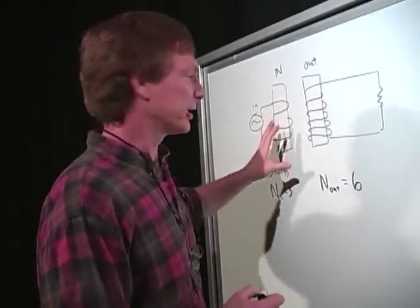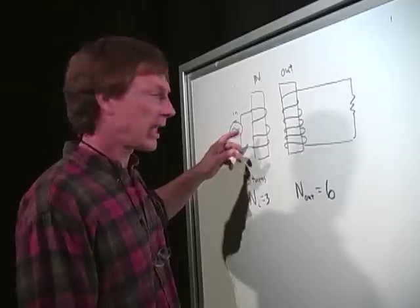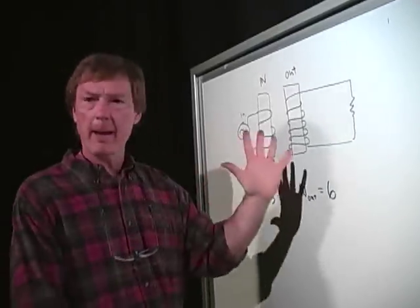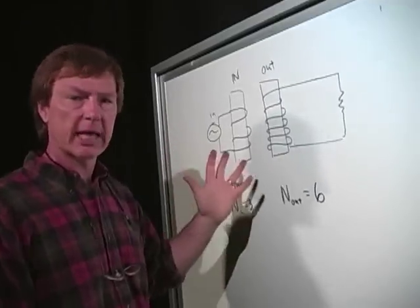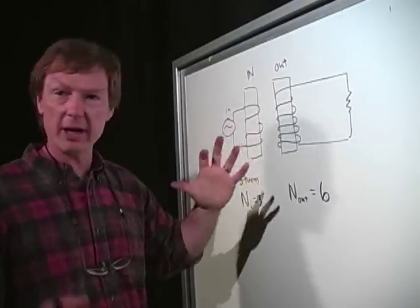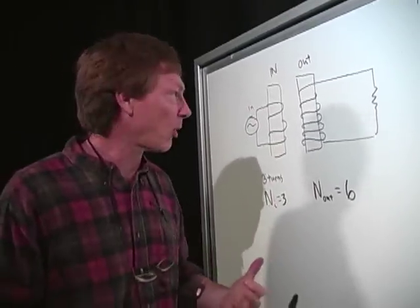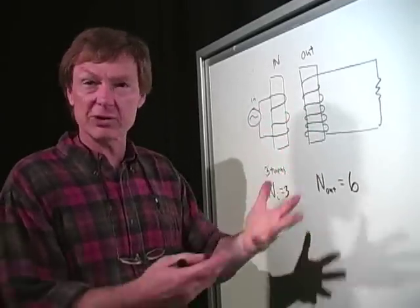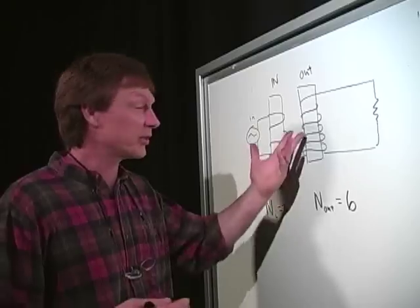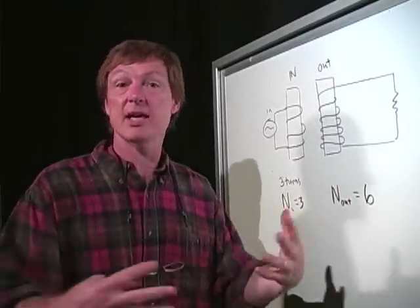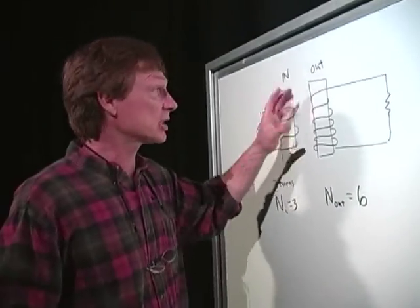Now, what's going to happen here is I'm running an AC current. So I'm sloshing electrons back and forth. As I slosh them back and forth, they create a magnetic field that sloshes back and forth. That's like producing a wave in the water. And these electrons here, which are like stuff floating on the water, they feel that electromagnetic wave. And they start sloshing back and forth without even touching.